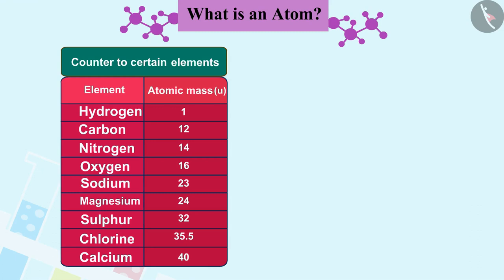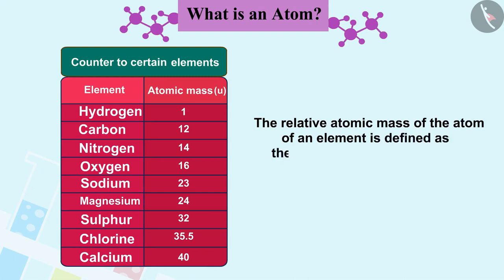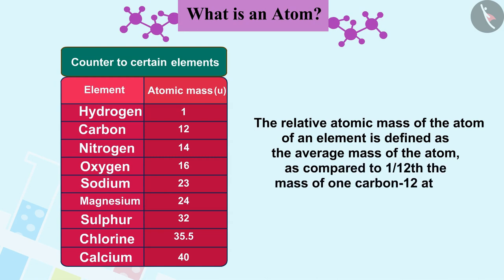Just like in this example, the relative atomic mass of atoms of an element is defined as the average mass of atoms as compared to one-twelfth part of the mass of one carbon-12 atom.